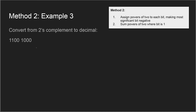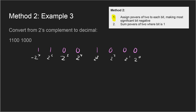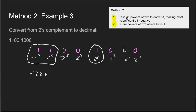Third and final example with method two: 1100 1000. Step one: assign powers of two, two to the zero through two to the seventh, with a negative sign on two to the seventh. Step two: the one-bits are at two to the seventh, two to the sixth, and two to the third. So we have negative 128 + 64 + 8 = negative 56, which matches what we got with method one.